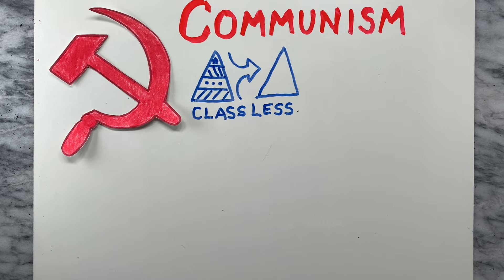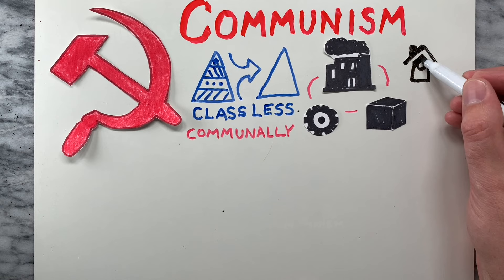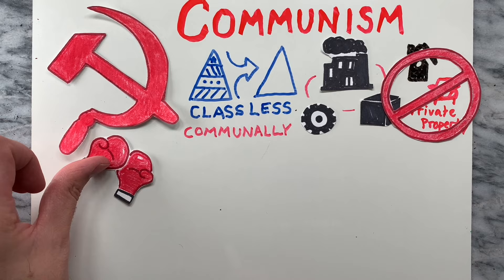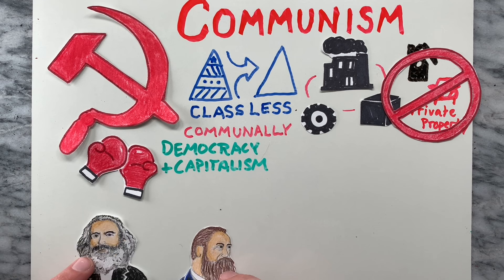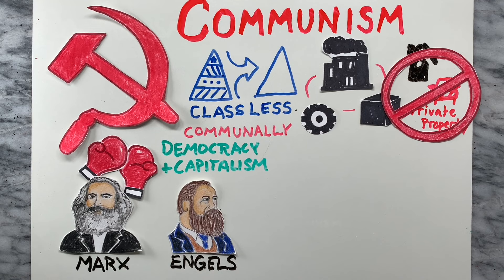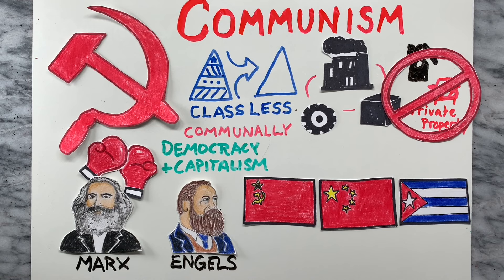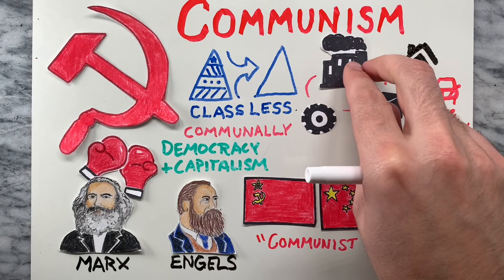Communism is an economic and political ideology that advocates for a classless system in which the means of production are owned communally and private property is non-existent or severely diminished. Communism positions itself in opposition to liberal democracy and capitalism. Karl Marx and Friedrich Engels developed and laid the groundwork for the theory and practice of communism. Although the former Soviet Union, China, and Cuba, among other nations, have had nominally communist governments, there's never actually been a purely communist state that has completely eliminated personal property, money, and class systems.